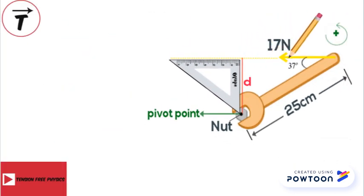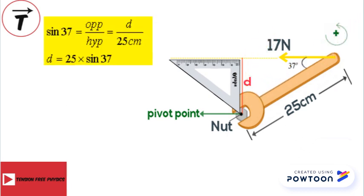Consider this triangle. In this triangle, sine 37 equals opposite over the hypotenuse equals D over 25, so D is equal 25 times sine 37.